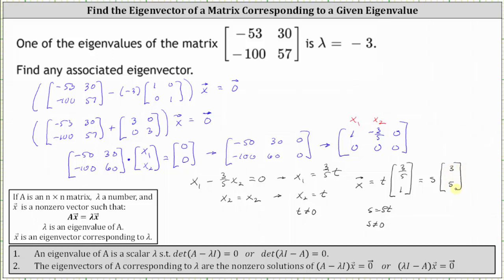So again, we can say all the eigenvectors corresponding to lambda equals negative three are all the scalar multiples of the vector three-fifths, one, as long as t doesn't equal zero, or all the scalar multiples of the vector three, five, as long as s doesn't equal zero.